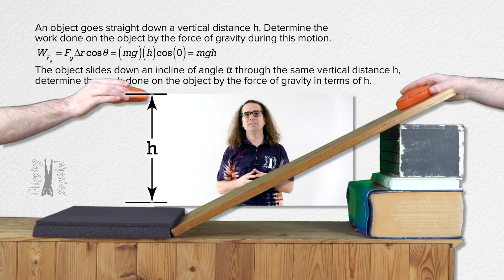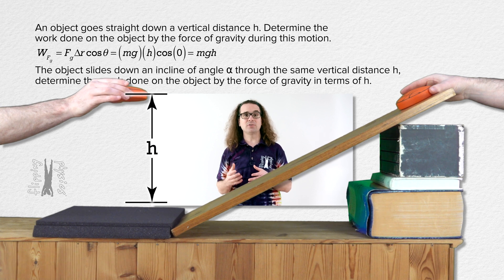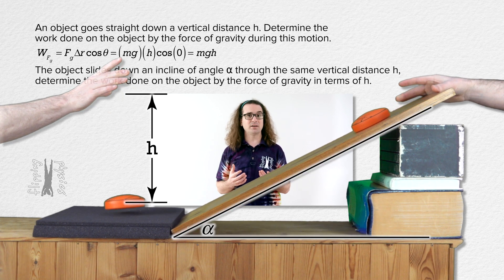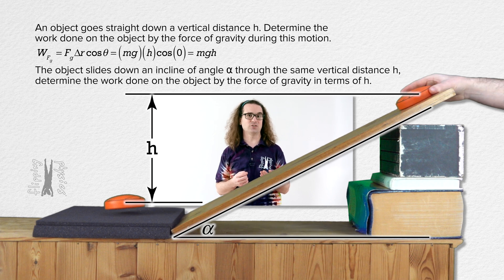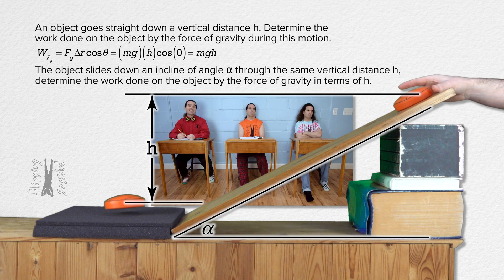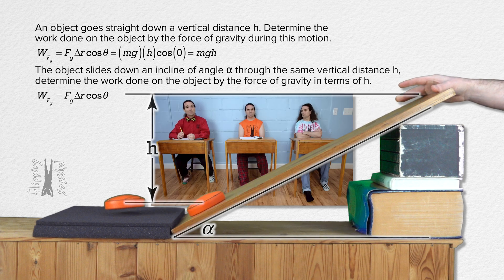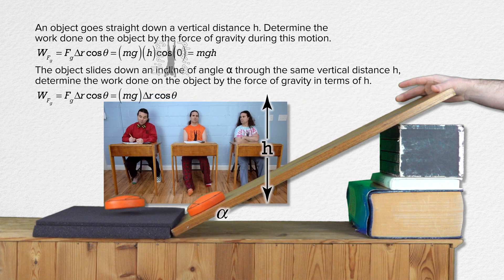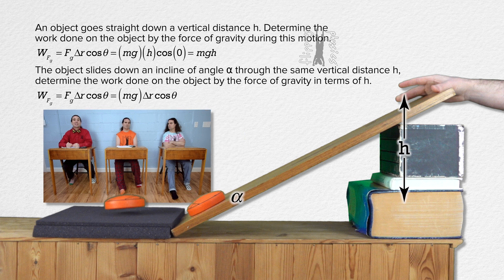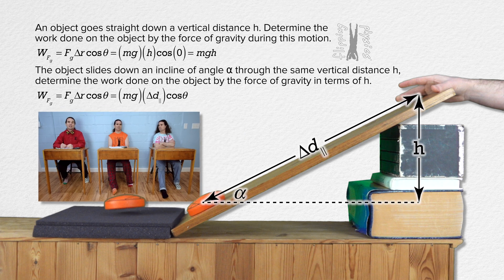Bobby, if the object instead slides down an incline of angle alpha through the same vertical distance h, please find the work done on the object by the force of gravity in terms of h. We have the same work equation. Force of gravity is still mass times acceleration due to gravity. The displacement now is the displacement parallel to the incline, which we can label delta d parallel.